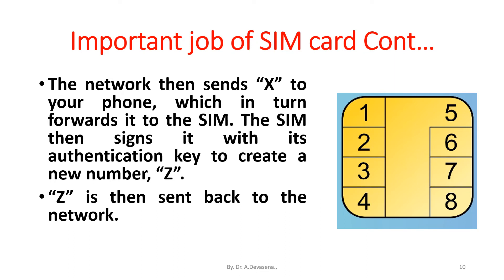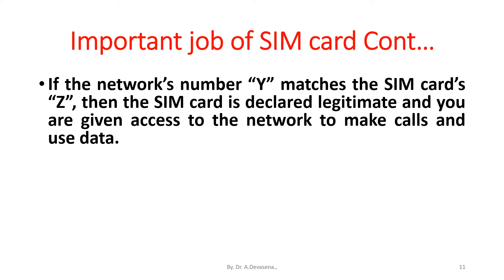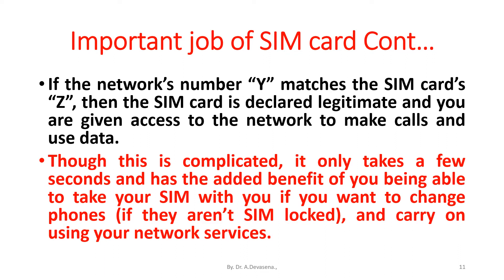The SIM then signs X with its authentication key to create a new number called Z. Z is then sent back to the network. If the network's number Y matches the SIM card's number Z, then the SIM card is declared legitimate and you are given access to the network to make calls and use data. Though this process is complicated, it only takes a few seconds, and you can take your SIM with you if you want to change phones and carry on using your network services.